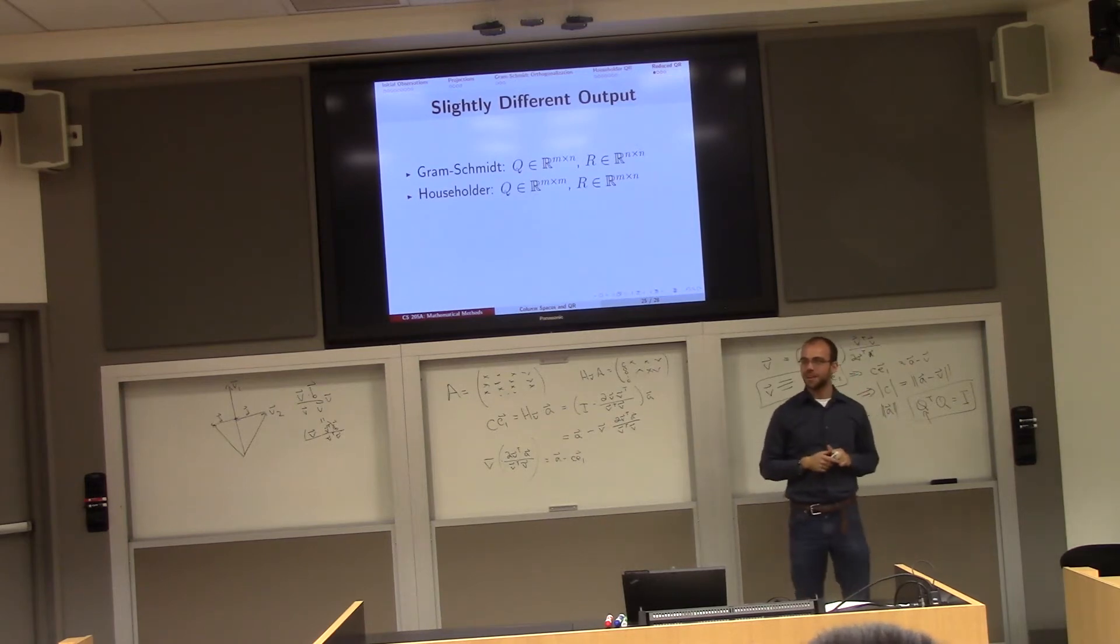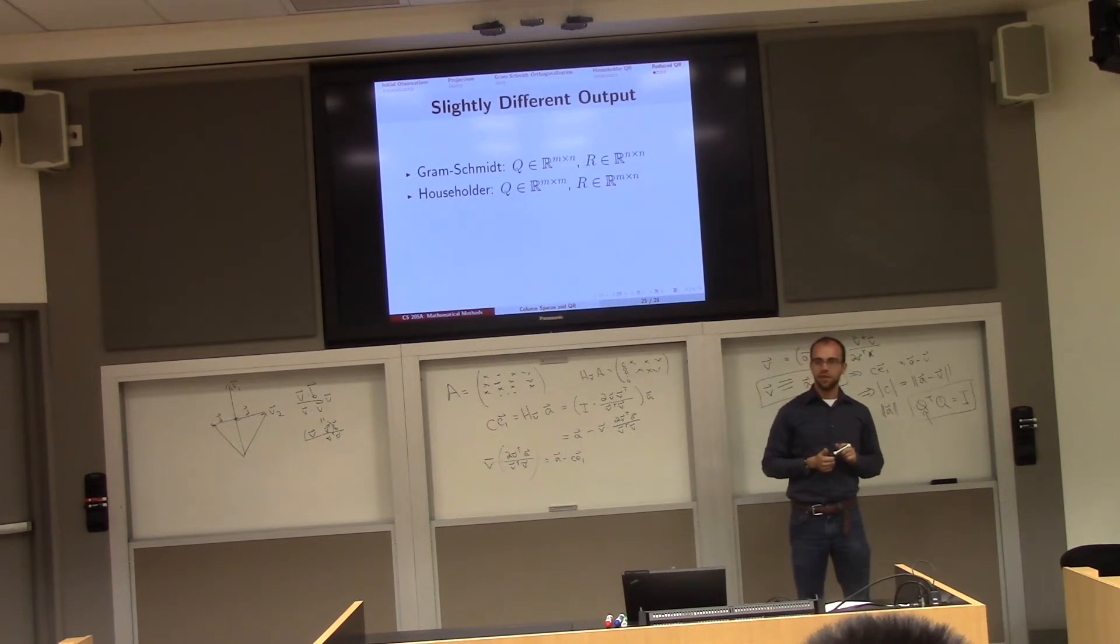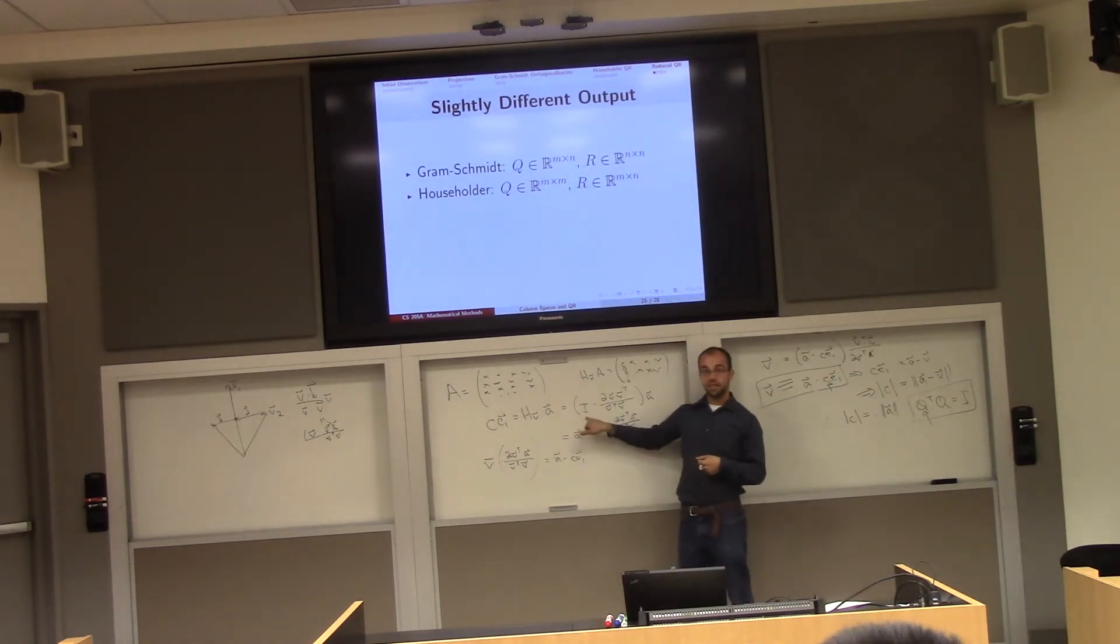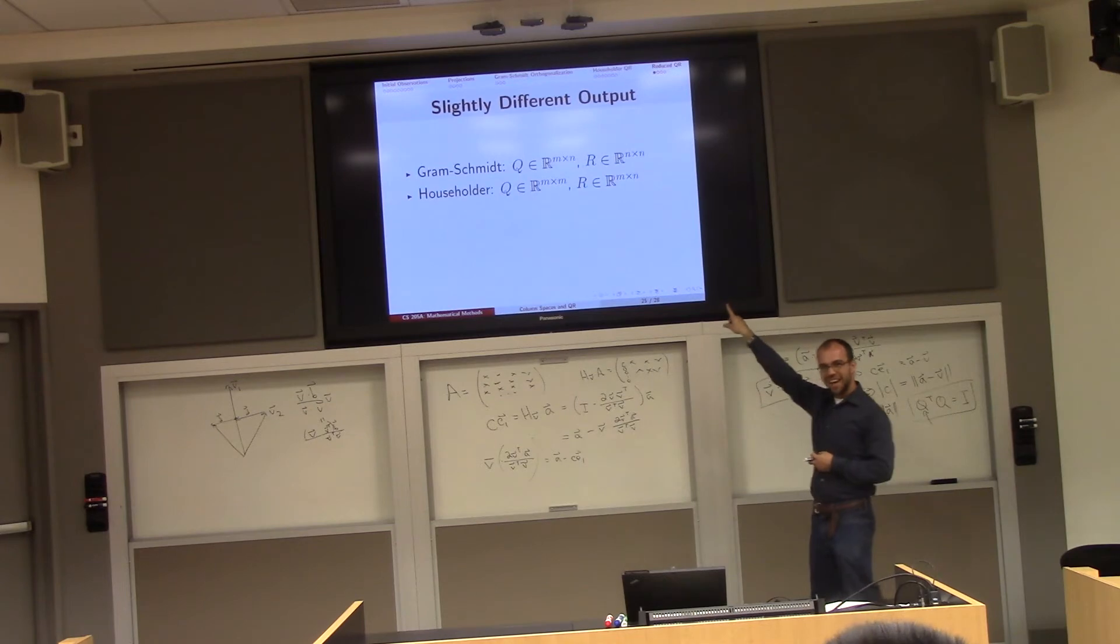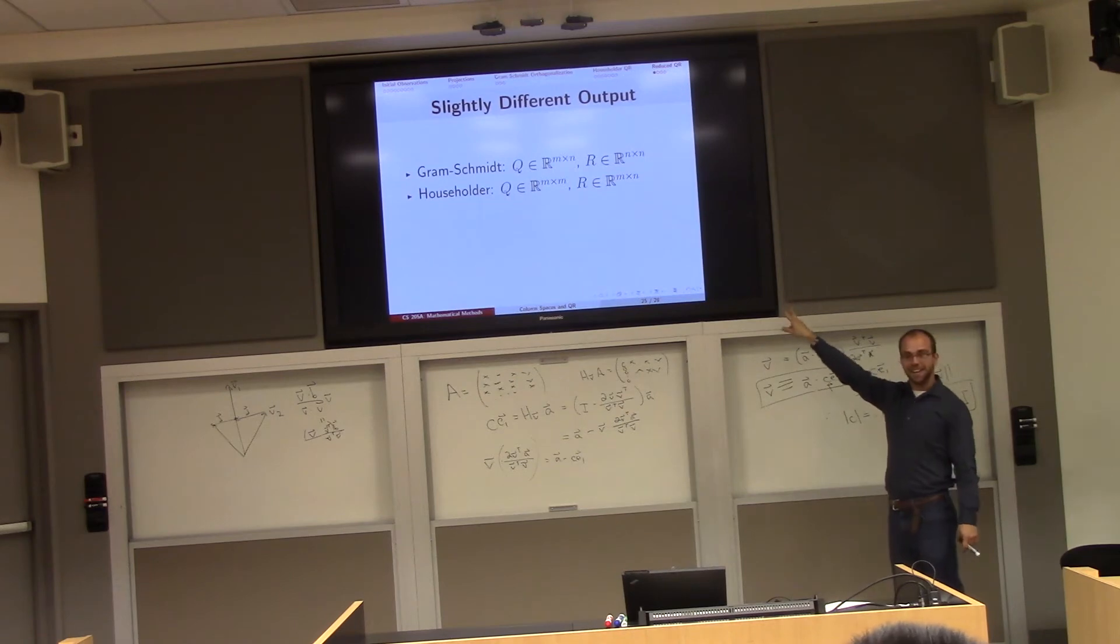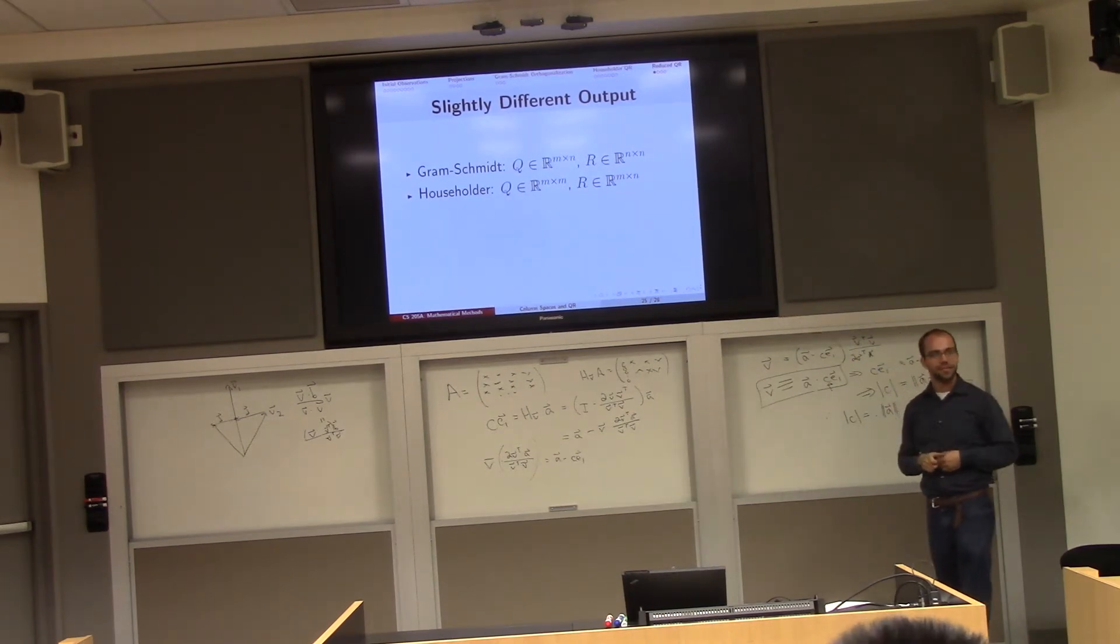But when I did Householder stuff, remember I was pre-multiplying by these orthogonal things. And if you look back at our expression for H sub V, this guy here, he's square. So in this case I was pre-multiplying by a bunch of M by M things and leaving A on the right-hand side. The A turns into this upper triangular thing and he remains M by N. These are two slightly different sized things.